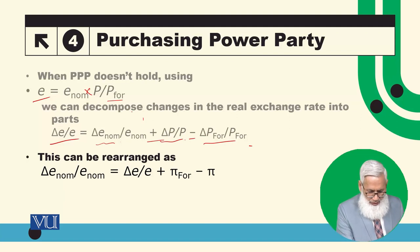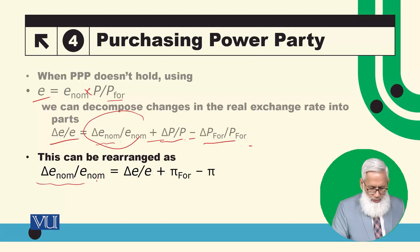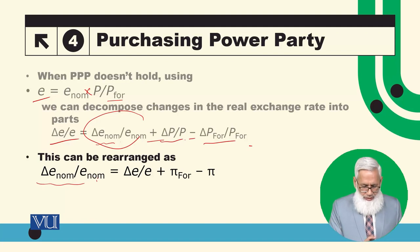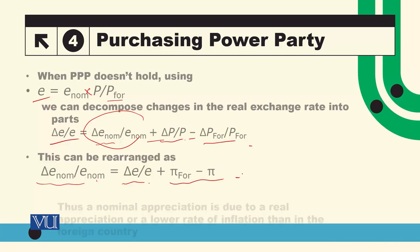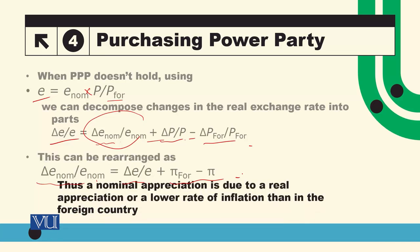So this can be rearranged: اگر آپ اس term کو left hand side پر لے جائیں تو جو nominal exchange rate میں change آ رہی ہے، this is equal to the change in the real exchange rate plus the difference between prices in foreign countries اور domestic prices میں change۔ So that's nominal appreciation — اگر nominal exchange rate میں اضافہ ہوتا ہے، it can be due to number one کہ آپ کا real exchange rate appreciate ہو گیا، اور second reason یہ کہ آپ کا domestic inflation foreign inflation سے کم ہو۔